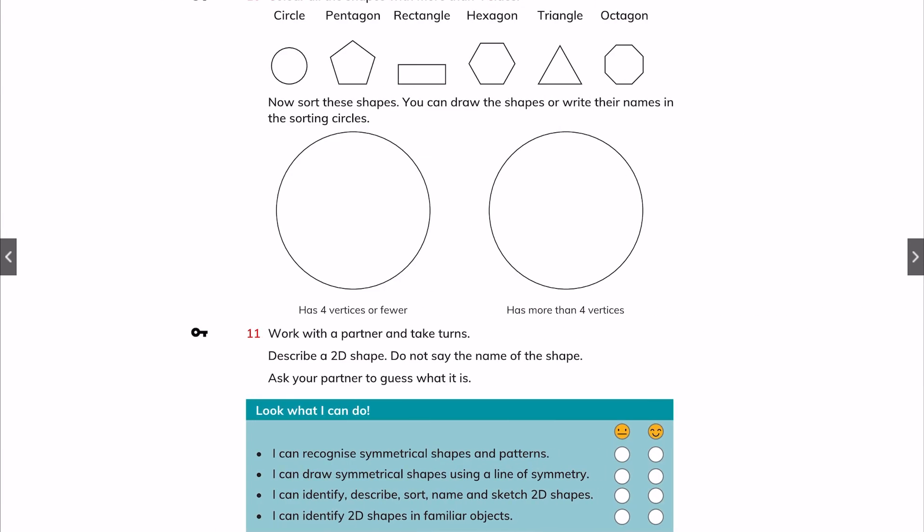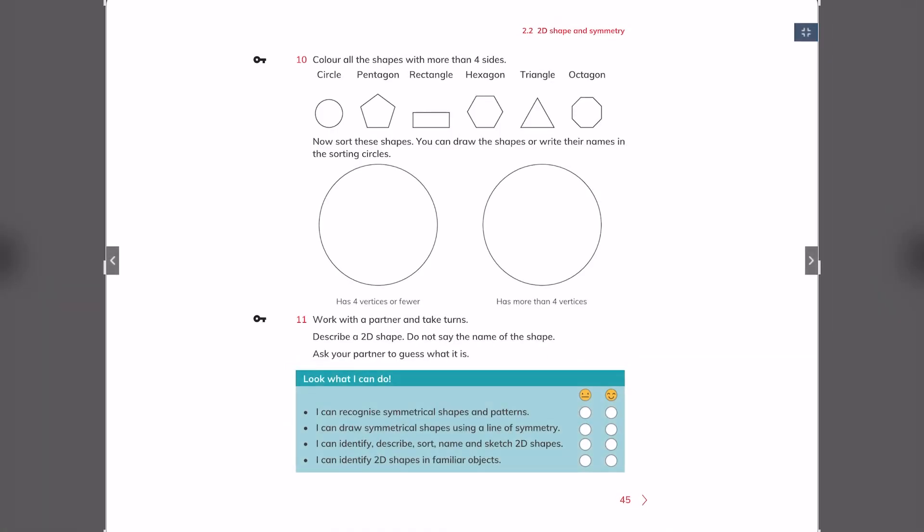Now we go to the last page of our unit 2, page 45. Look at this. Color the shapes with more than four sides. Any shape that have four sides you cannot color them, but more than four, okay.